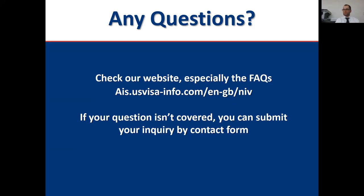Q&A: What happens if I haven't been given a DS-2019 or I-20? You'll need to get in touch with the program that's sponsoring your study abroad in the States — they are the ones who issue that document, not the Department of State. If you ask the embassy, we won't have an answer for you. Contact your program official and they'll be able to get it to you. You must have the actual paper copy when you come in.